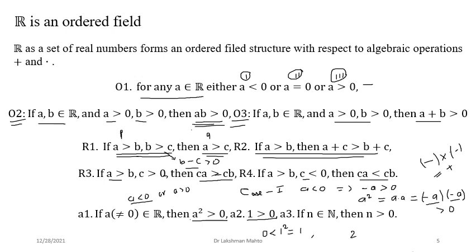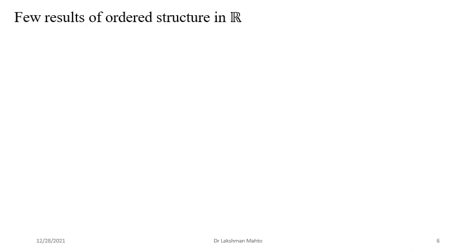To prove 2 > 0: we have already proved 1 > 0, and 2 = 1 + 1 is the sum of two positive real numbers, so 2 > 0. Likewise, 3 > 0, 4 > 0, and hence n > 0 for any natural number n — all provable from these three order properties. Now the question: is there a smallest positive real number?